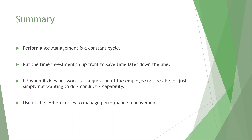To summarize today's session, the key messages around performance management are: ensure performance management is a constant cycle — plan, monitor, review. Keep paperwork to record employee performance and link it with company goals. Put time investment in upfront, which will save you time later down the line. If it doesn't work, ask whether the employee is unable to perform or simply unwilling — conduct over capability. Where possible, use further HR processes to manage performance, build a culture of continual development, develop company values and employer brand, which can define behaviors, drive recruitment, and link back to performance.